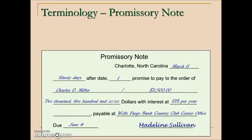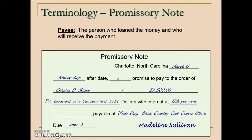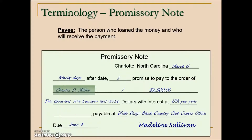The next term we want to look at is the payee. This is the person who loaned the money, or who will receive the payment. If you read '90 days after date I promise to pay to the order of,' that refers to the payee.